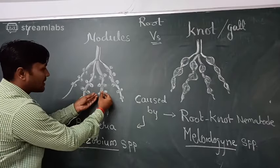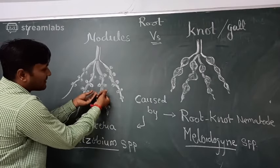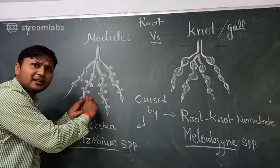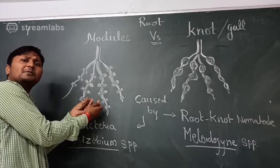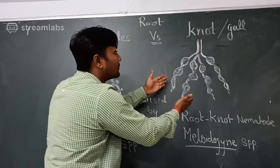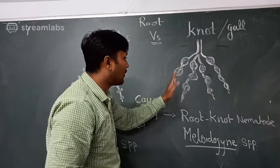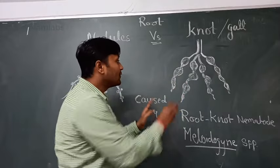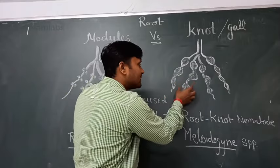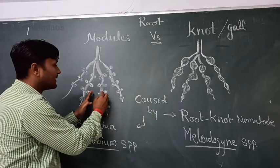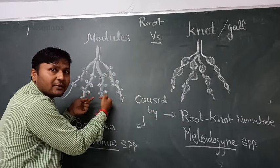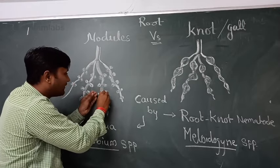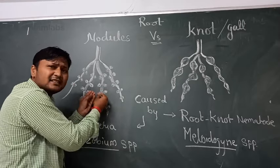Then you can detach them. Root nodules will be easily detachable. But in case of root knots and root galls, if you try to detach them, they will be joined with the roots. When you detach nodules, they are very easily detached.